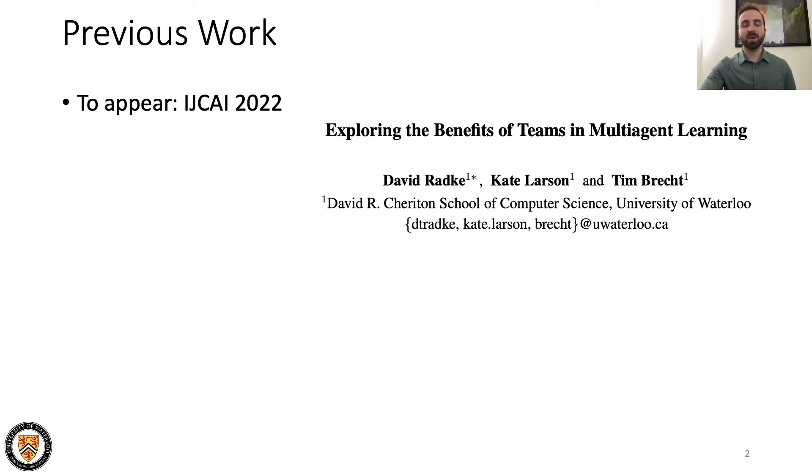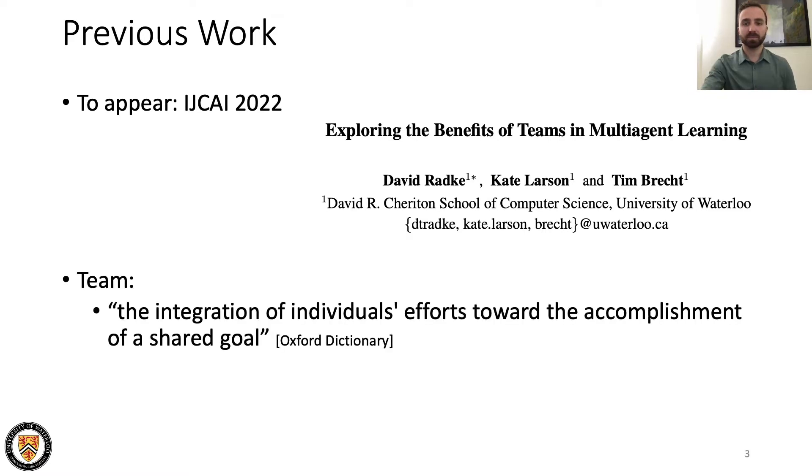This paper is a continuation of previous work being published at ICKAI this July. Our research has been focused on understanding how teams impact how agents learn. A team is defined as a group of agents that combine their efforts towards a shared overall goal and the science of teamwork is typically studied in the fields of organizational psychology and biology.